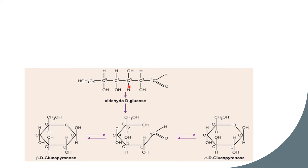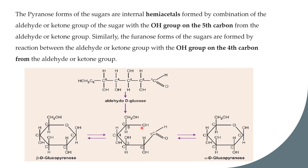In forming the ring, carbon 1 bonds with the oxygen of the OH on carbon 5. Carbon 5 is turned so that its oxygen can bond with carbon 1. When this linkage forms, the double bond of the aldehyde on carbon 1 is converted into a single bond, and a hydrogen from the environment attaches to the oxygen. The linkage between carbon 1 and this oxygen is called a hemiacetal linkage.